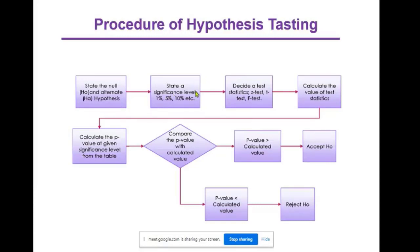Second, state a significance level: 1%, 5%, or 10%. Third, decide on test statistics - Z-test, T-test, or F-test.